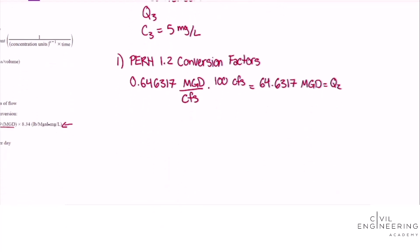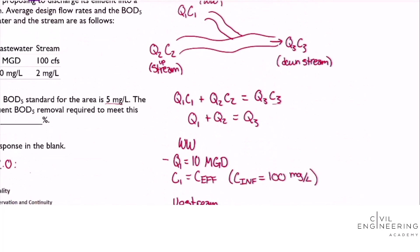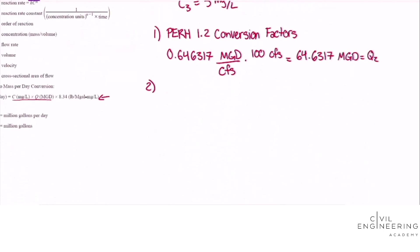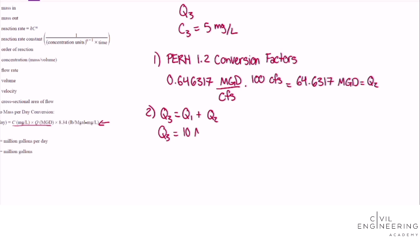Our second step we need to use this equation to find Q3 which is the total flow after the mixing. So Q3 equals Q1 plus Q2 and now that they're both in the same units we can just plug them in. We got 10 mgd plus this 64.6317 and that will give us a Q3 of 74.6317 mgd.